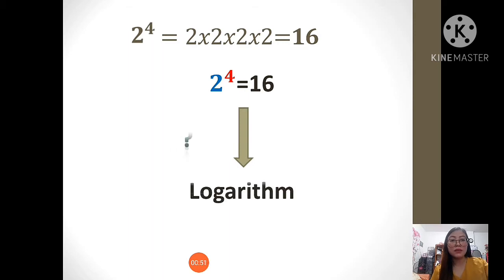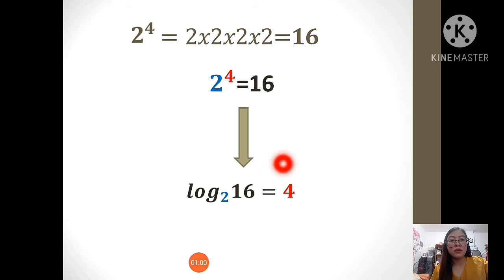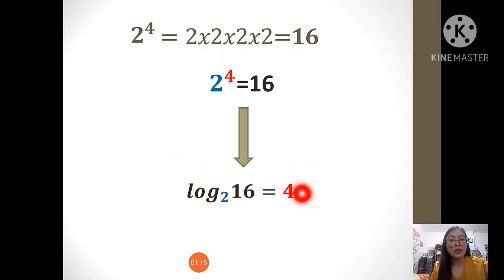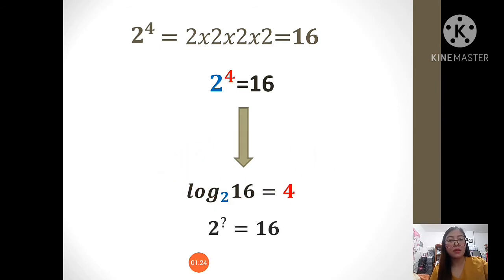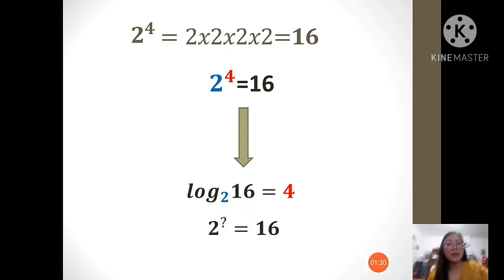Now, how can we rewrite it in logarithm? With the exact same thing, it can be written as log 16 to the base 2 equals 4. Logarithm can be written as log. But look at this expression carefully. The power of the exponent is the answer, and the base of the log is the base number. This log expression is asking: 2 raised to what number will give us 16? It is 2 raised to 4 equals 16.